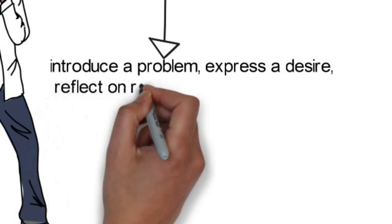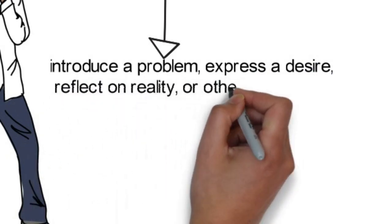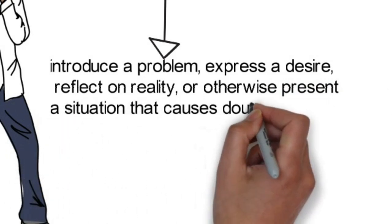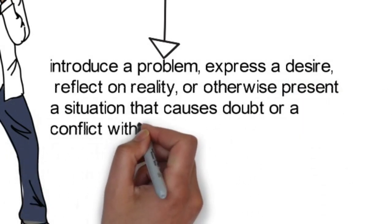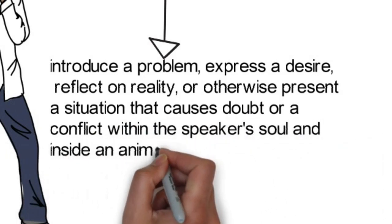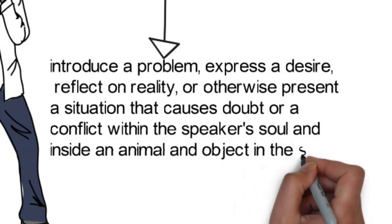Octave represents introductions or problems. Because in eight lines we find the problems, we find a desire of someone's, it's reflect the reality, and you can say somewhere that it presents the situations that cause doubt and conflicts within the speaker's soul and inside an animal and object or in the story.